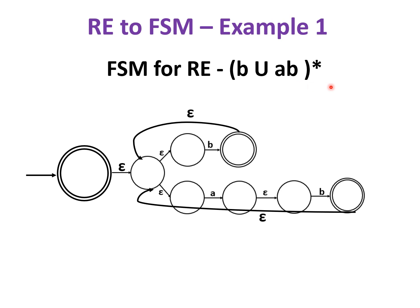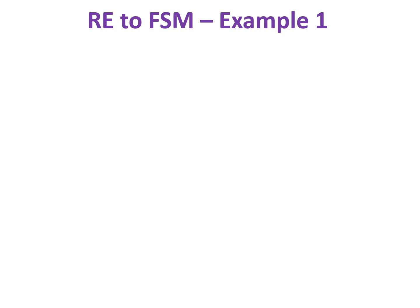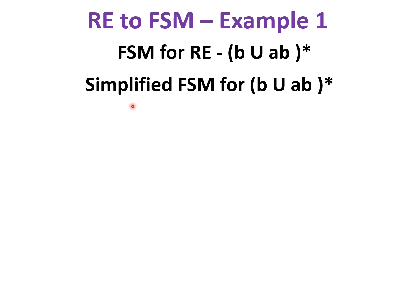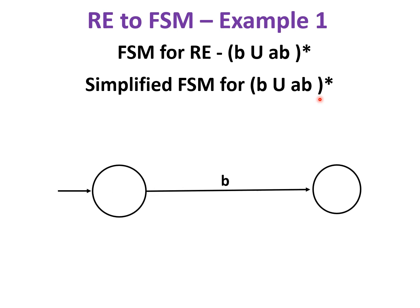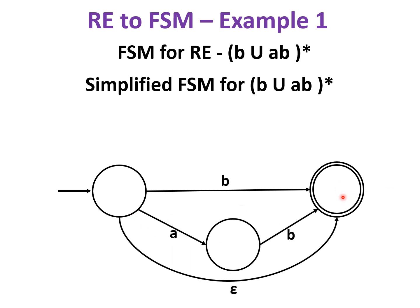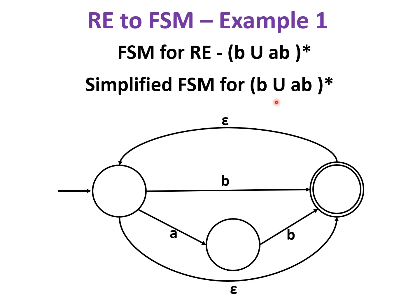The FSM is preferably non-deterministic because it has epsilon transitions. We can also write a simplified FSM: B or AB transitions reaching the final state, one epsilon transition from initial to final state for the epsilon string, and from the final state back to the initial state to repeat the loop. This is the simplified FSM for (B∪AB)*.